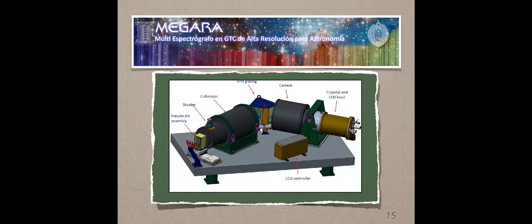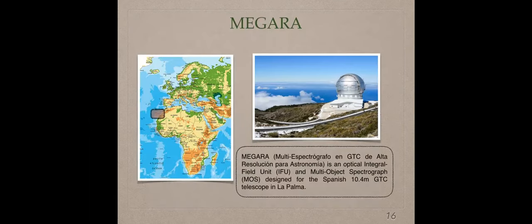There is an instrument that maybe you know, the name is MEGARA, that it means Multi-Espectrograph GTC de alta resolución para astronomía. In this image, you can observe the different parts that component this spectrograph. We have the collimator, the VPH grating, that works like a filter, camera, the CCD, etc.